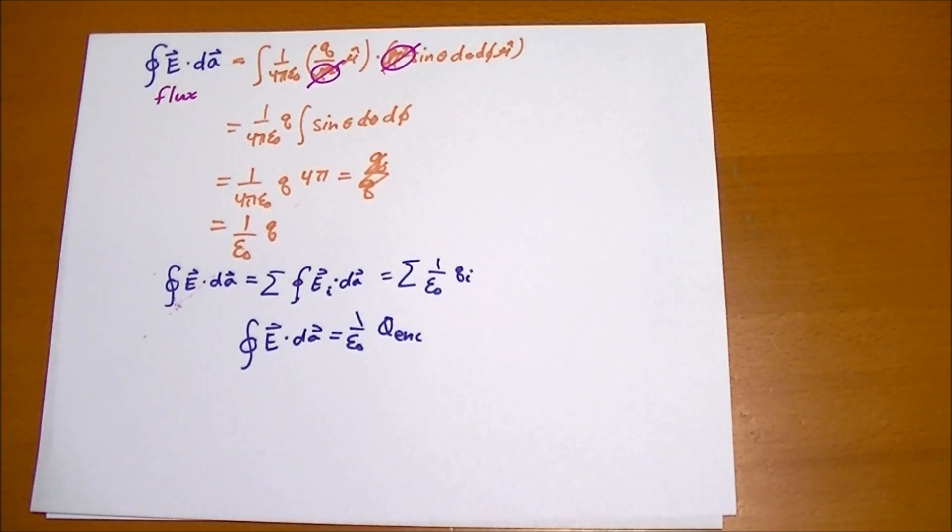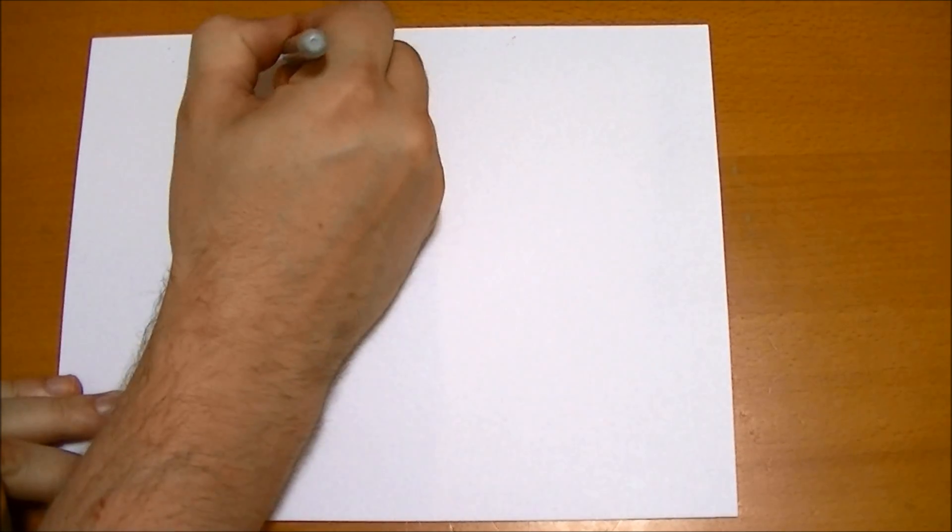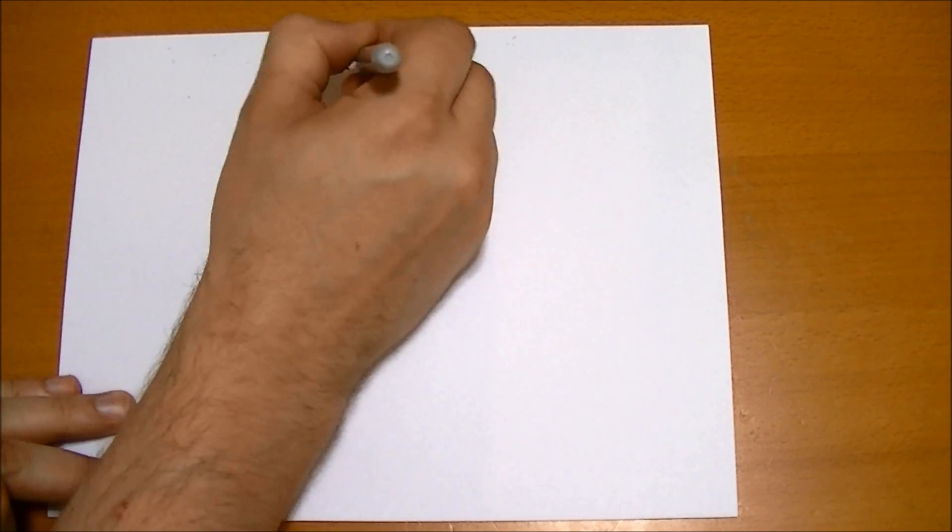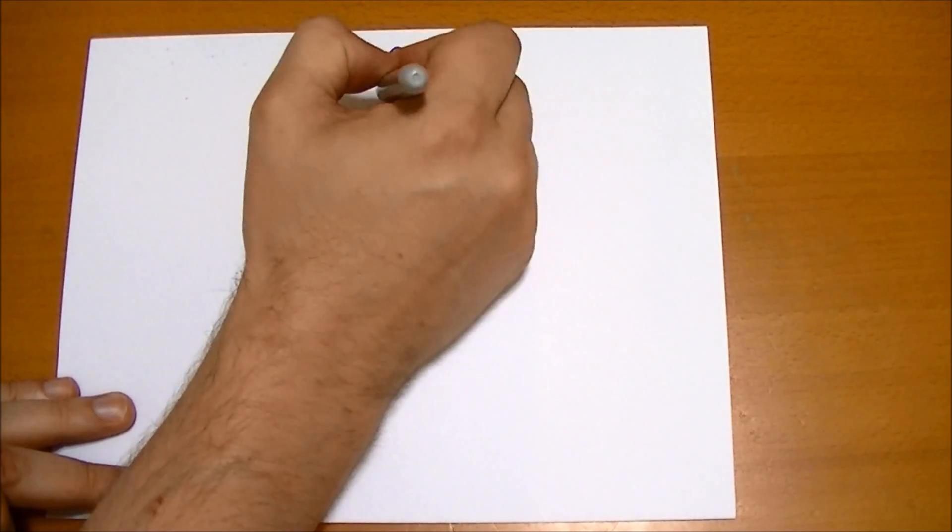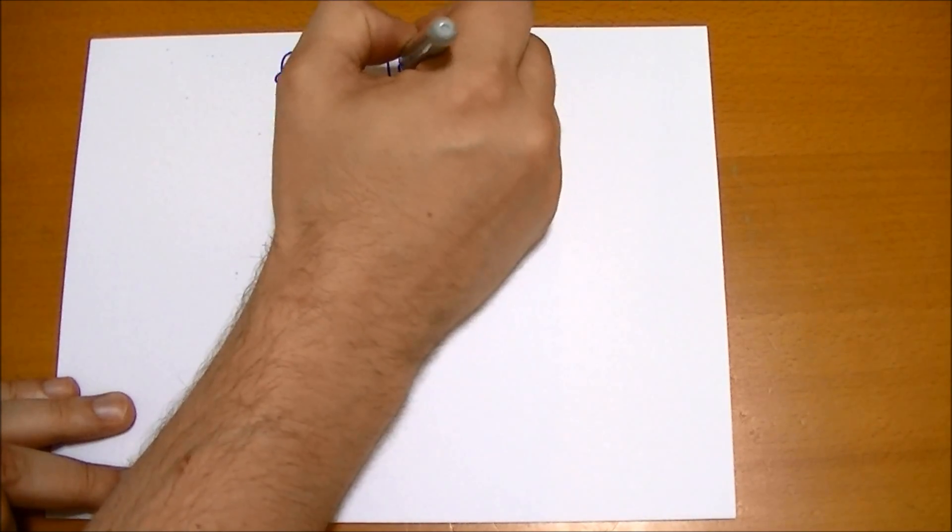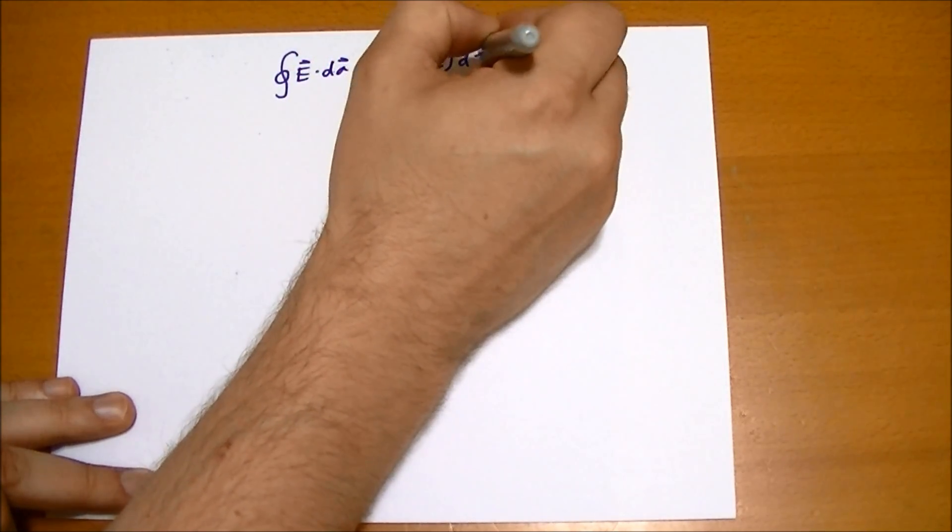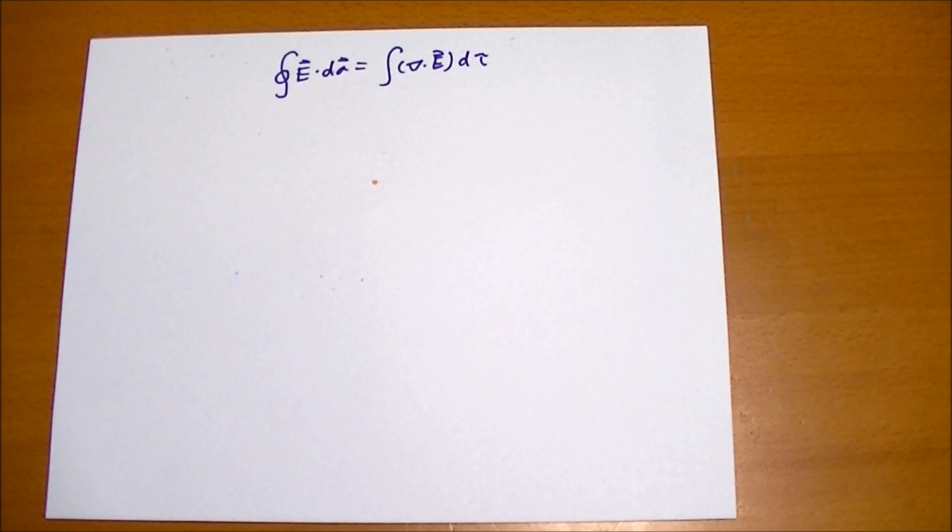If you remember that any surface integral, E vector dot dA, is going to be the same as the volume integral of the divergence of that same vector field, d tau. This is Green's theorem, Gauss's theorem, the divergence theorem, whatever you want to call it.